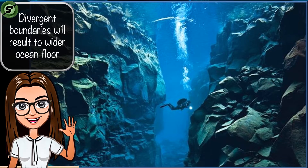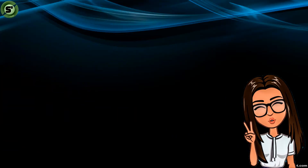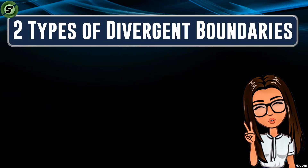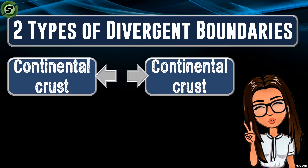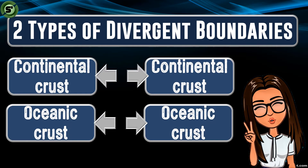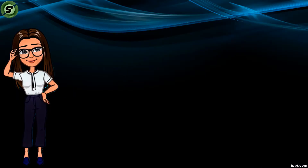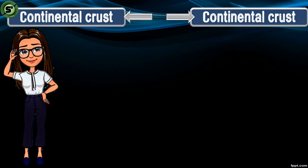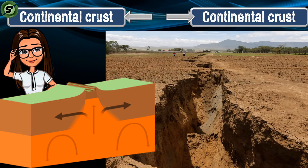There are two types of diverging boundaries. The first happens when continental crust splits apart, and the second occurs when oceanic crust breaks up. Let us first tackle continental divergence and learn the mystery of why land in Africa splits apart.